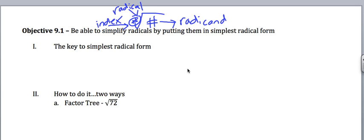Okay, so the key to simplest radical form is that you have to have the smallest number possible underneath the square root.